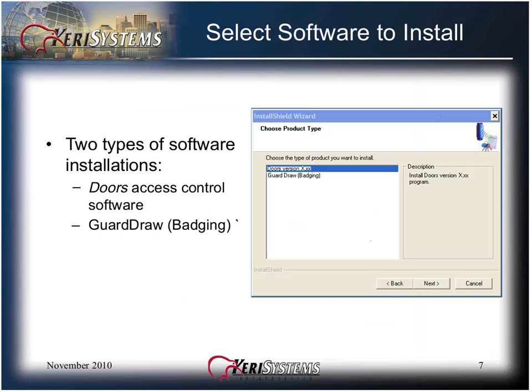You must select the type of software installation. This allows you to add or update the badging software on an existing DOORS installation in order to design and print ID badges. Badging is a license paid option to DOORS32 software, and badging is taught in a separate module. Click the Next button to continue.